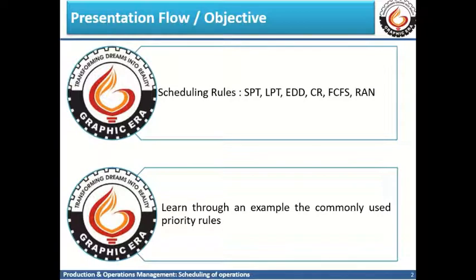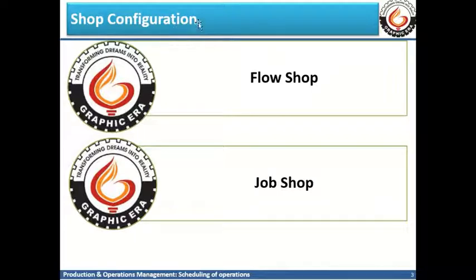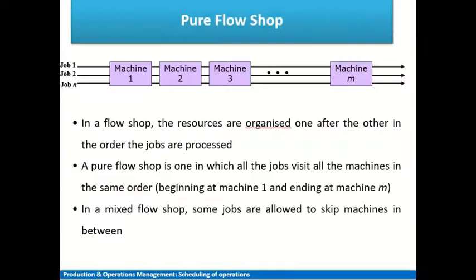We'll also see through an example how all these scheduling rules are applied in practice. Before we begin with the various scheduling rules, we need to understand the concept of shop configuration. In any manufacturing unit, we have an arrangement of machines where processing is performed on various work orders or jobs to produce the finished product to be supplied to customers. There are two main kinds of configurations: the flow shop and the job shop.